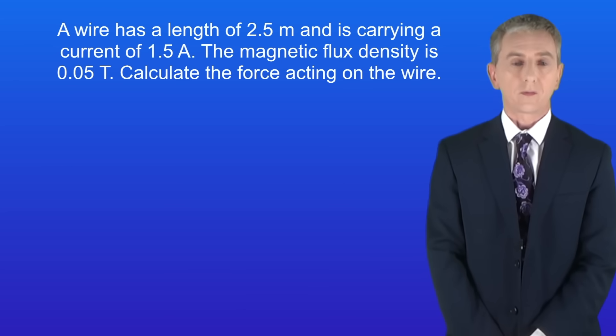Here's a sample question for you. A wire has a length of 2.5 meters and is carrying a current of 1.5 amperes. The magnetic flux density is 0.05 tesla. Calculate the force acting on the wire. Pause the video and try this yourself.